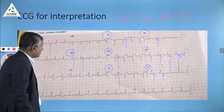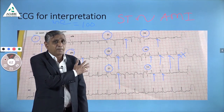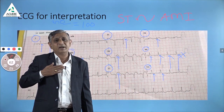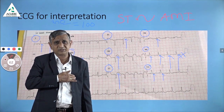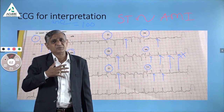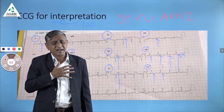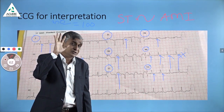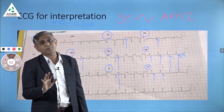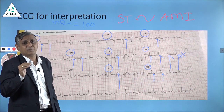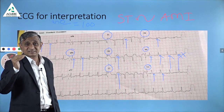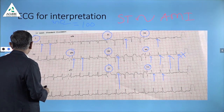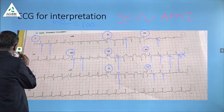The upper and lateral portion of the heart as well as the anterior portion — V1, V2, V3, and V4 — are all affected. This ST elevation alone is not sufficient; it must be supported by ST depression in other leads.